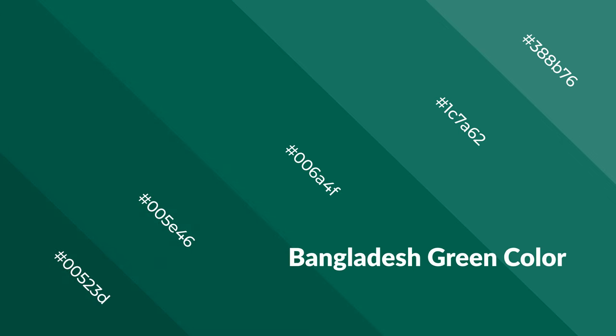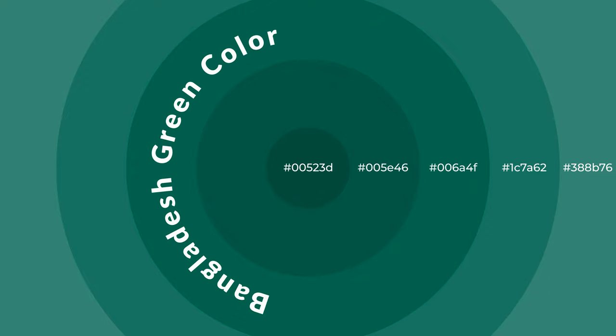Cool colors are like water, ice, sky, grass, soft and snow. You can see them used in baby products.